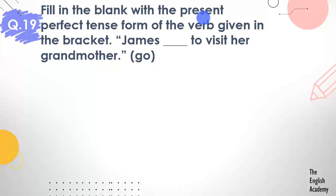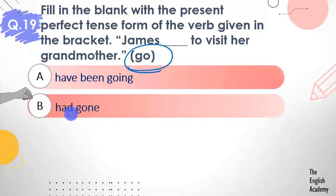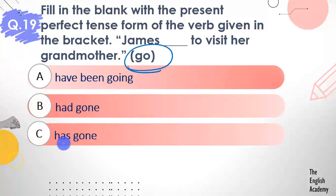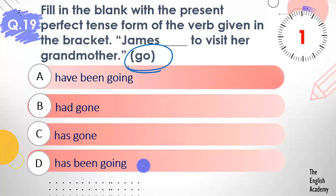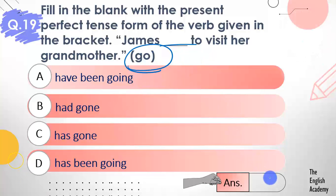Question number 19: Fill in the blank with the present perfect tense form of the verb given in brackets. James ___ to visit her grandmother. Options: A) have been going, B) had gone, C) has gone, D) has been going. The answer is option C — has gone. James has gone to visit her grandmother.